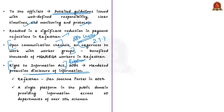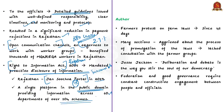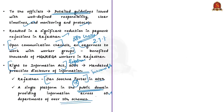However, a lot of programs that the government implements have problems with regard to information — they are inaccessible, and when accessible, they are not properly defined. To overcome this, the Rajasthan government launched a program called the Jansuchna portal in 2019. It is a single platform in the public domain providing information across 60 departments covering over 104 schemes. The design and formats of each scheme were carefully arrived at through digital dialogue involving government officials and numerous civil society organizations.